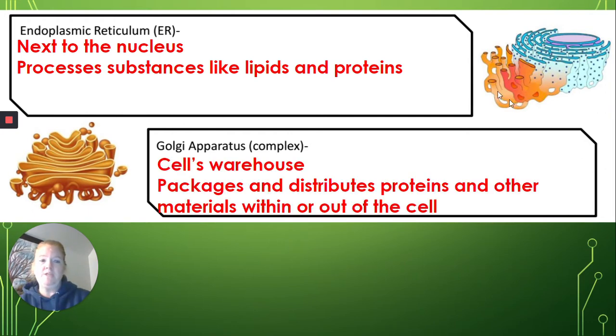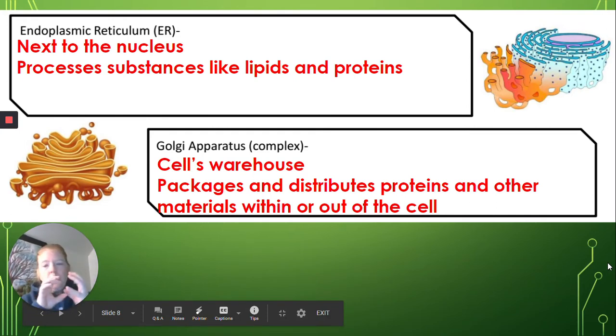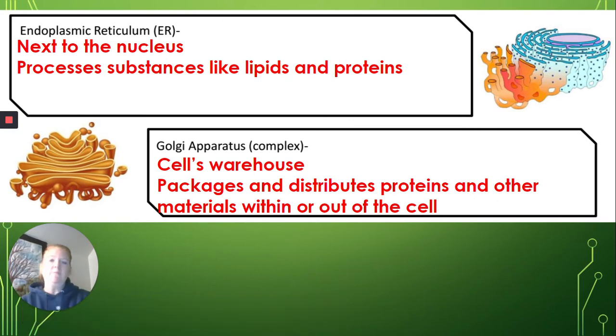The Golgi apparatus, which you can see here, but also here, is like the cell's warehouse, or sometimes referred to as the post office, it packages and distributes proteins and other lipids and materials, everything else, and sends them around in the cell where they need to go. Okay, so it's like total warehouse, find it, package it, ship it up, send it off where it needs to go. Does it need to go in the cell? Is it something that needs to be exported? Do we just make a hormone and we need to send it out? Is this waste? Does this need to be removed? The Golgi is going to decide where it goes.